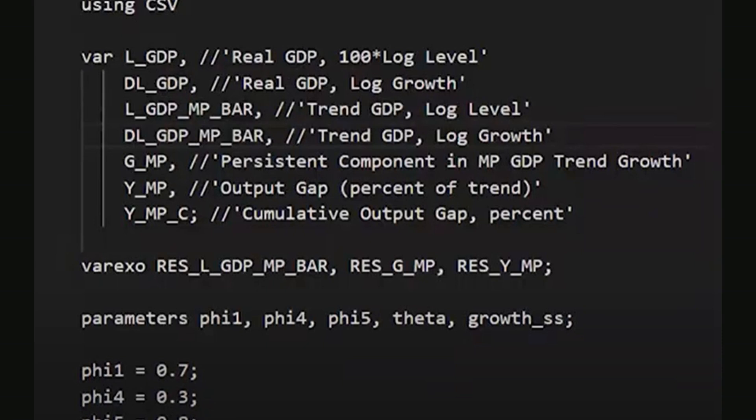In Dynare, as in Julia and Matlab, endogenous variables are introduced using the keyword VR, followed by a list of variables.